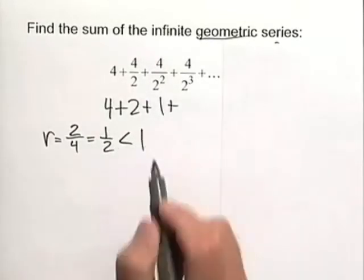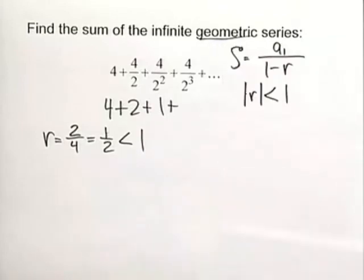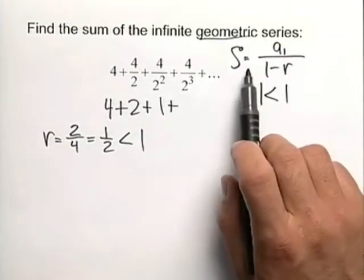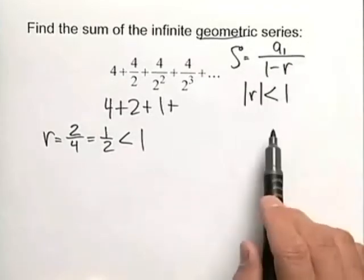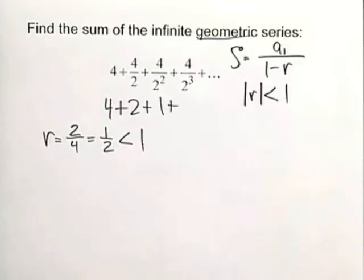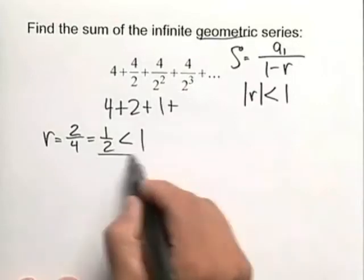Now since this value is less than 1, we can apply our infinite sum formula. The infinite sum for a geometric series is a sub 1 divided by 1 minus r, as long as the absolute value of r is less than 1, and we've satisfied that here.